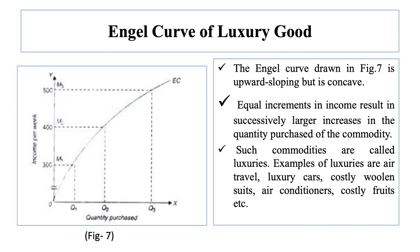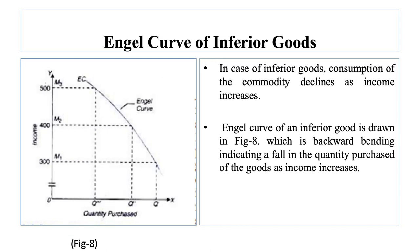Engel curve in case of inferior goods: In case of inferior goods, consumption of the commodity declines as income increases. The Engel curve of an inferior good is drawn in figure 8, which is backward bending, indicating a fall in the quantity purchased of the good as income increases.